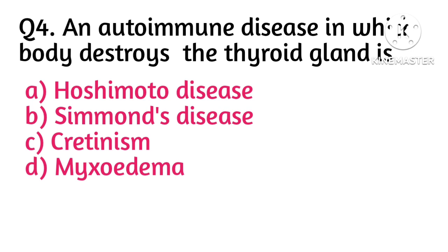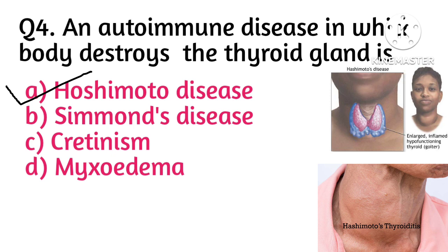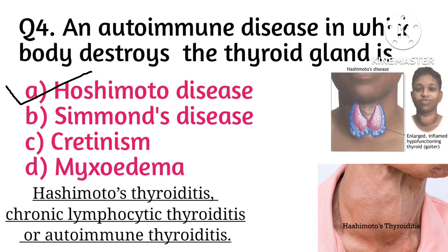Question number 4: an autoimmune disease in which the body destroys the thyroid gland — option A is correct, i.e., Hashimoto's disease. Hashimoto's thyroiditis, also known as chronic lymphocytic thyroiditis or autoimmune thyroiditis, is a disease in which the thyroid gland does not secrete enough thyroid hormone due to autoimmune activity.